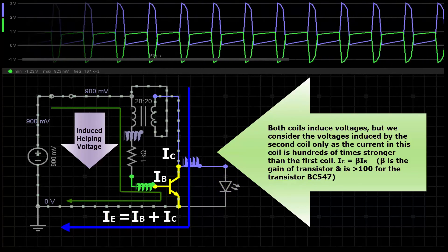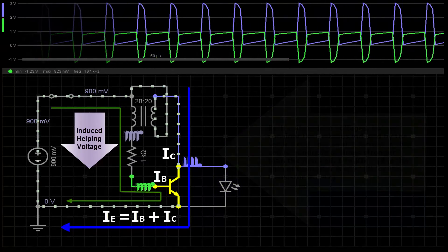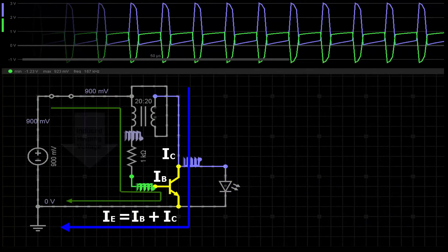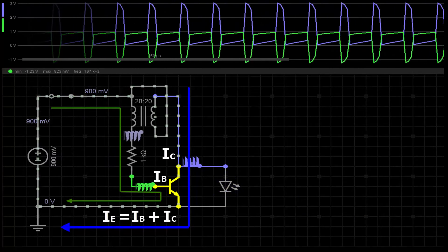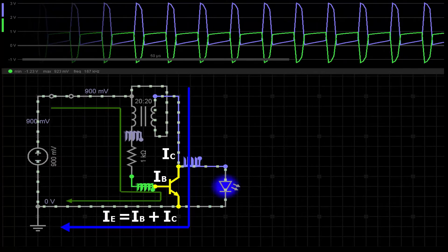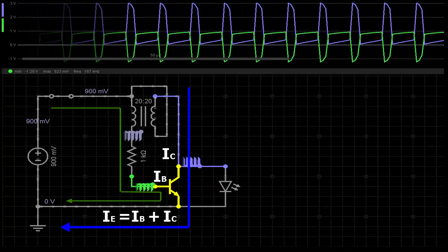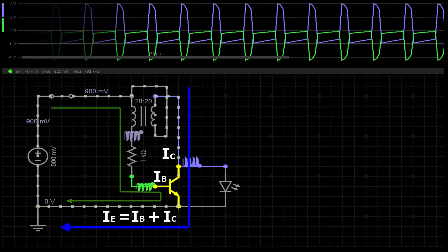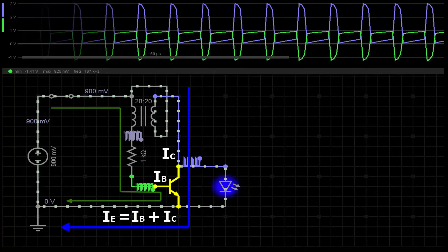The current in the second coil is as high as possible and no longer increases, so the helping voltage in the first coil disappears. This is because only changing currents induce voltages in inductors and the transistor starts to turn off. As the transistor is turning off,